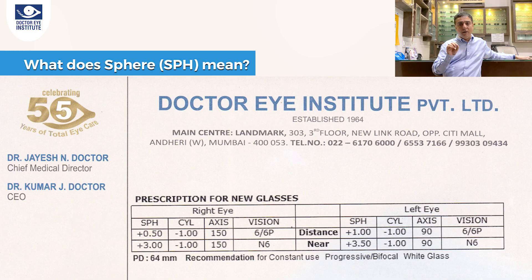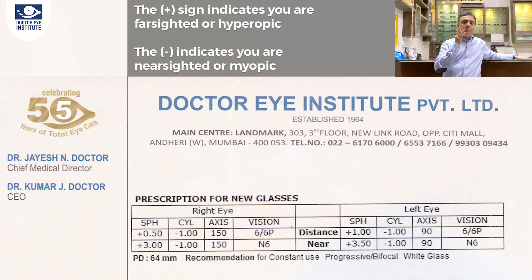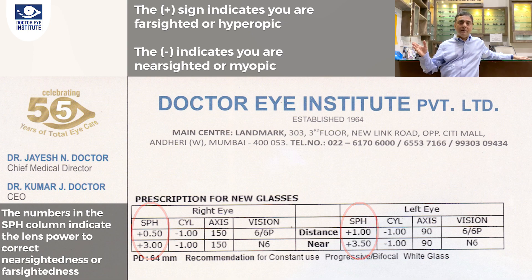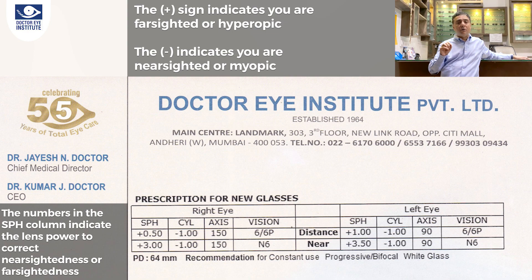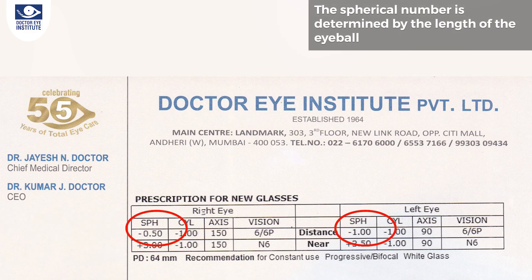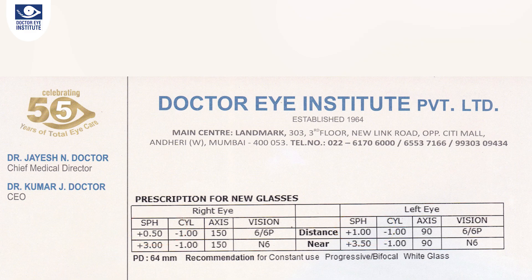The first part of the prescription is called the spherical number. Spherical numbers are either a plus number or a minus number. If it's a plus number, you are hyperopic. If you have a minus number, you are myopic, also called short-sightedness or nearsightedness. The spherical number is all to do with the length of the eyeball. If the eyeball is longer than normal, the patient has a minus number; if shorter than normal, the patient has a plus number.